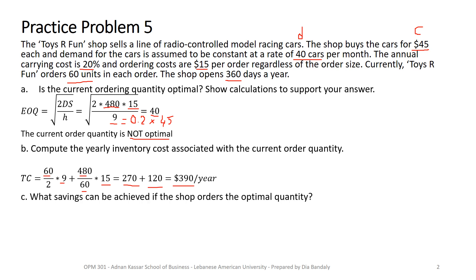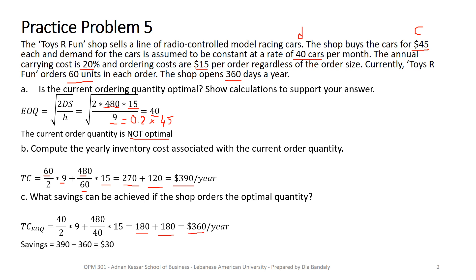What savings can be achieved by ordering the optimal quantity? We find the total cost at the EOQ and compare it to $390. The total cost at EOQ = 40 is $360. Notice the important property: at EOQ, holding cost equals ordering cost — use this to verify your answers. The saving is $390 − $360 = $30 per year.